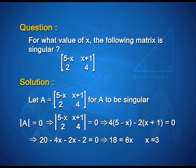For the solution, let A be the given matrix [5-x, x+1; 2, 4]. For A to be singular, determinant of A is equal to 0. That implies the determinant |5-x, x+1; 2, 4| = 0, which simplifies to 4(5-x) - 2(x+1) = 0.